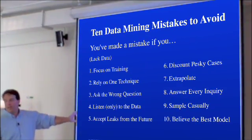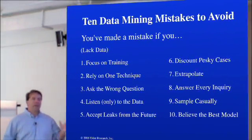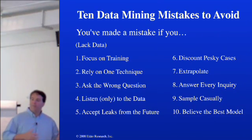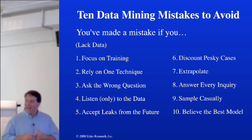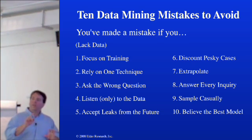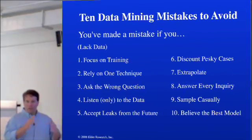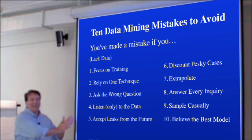It's a very common mistake to accept leaks from the future — to let information that wasn't available at that time influence your model. For instance, a lot of data warehouses are set up mostly for billing purposes, and they keep the latest address, marital status, and name changes. But if you use that same information to data mine, you might miss the fact that when you accepted that person as a client, they lived in the city rather than the suburbs, they weren't married — they had different characteristics. You have to date-stamp your information and ask: how can I recover what was known at the time?